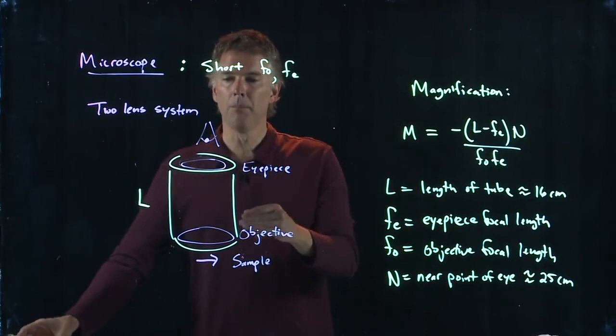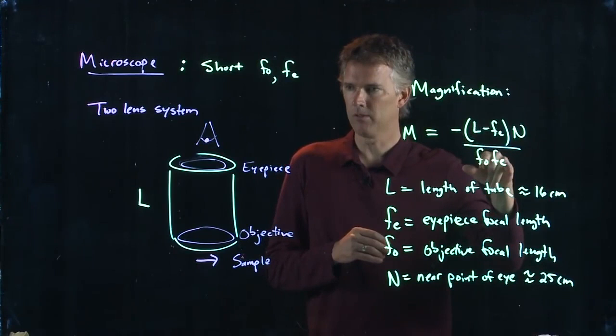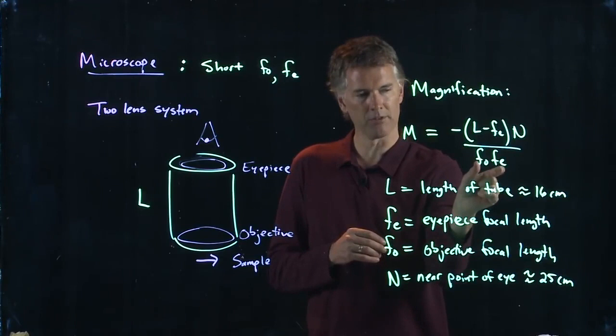Okay, but put them together in the right orientation and now you get dramatic increase in the magnification because those are multiplying each other down here. So if both those things are small, M can be very big. And you've looked through microscopes that are 100x, 200x, 500x. Okay, you can get incredible amounts of magnification.